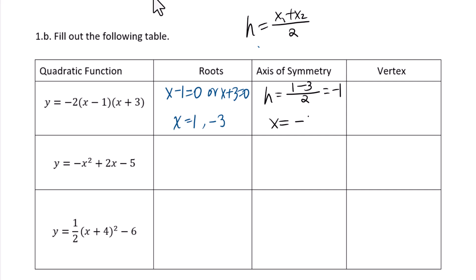So x equals negative 1 is the axis of symmetry. For the vertex, k equals f of h, and h is negative 1: negative 2 times (negative 1 minus 1) times (negative 1 plus 3) equals negative 2 times (negative 2) times 2 equals negative 8. So the vertex is (negative 1, negative 8).